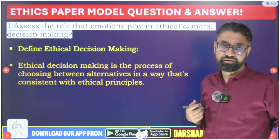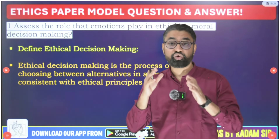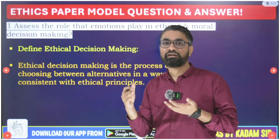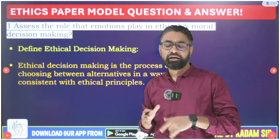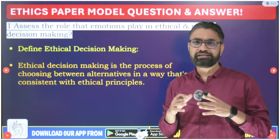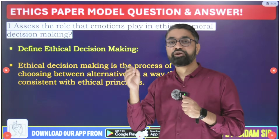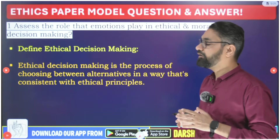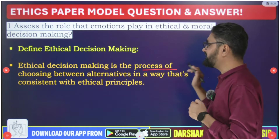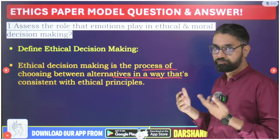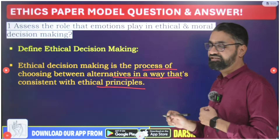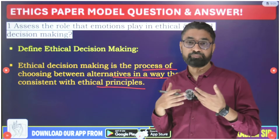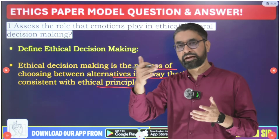Ethical decision making means using your conscience, prudent reasoned mind to analyze all possible alternatives — moral and ethical — and then passing a final decision. It is simply a process of ethical reflection on different moral principles and then choosing one ethical course of action after debating different moral laws. Ethical decision making is the process of choosing between different moral alternatives in a way that is consistent with ethical principles.